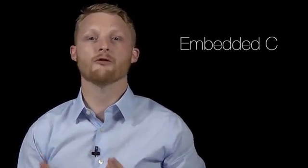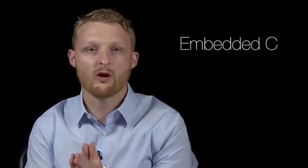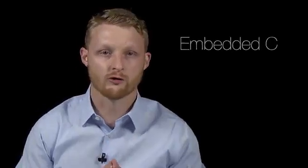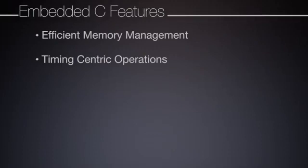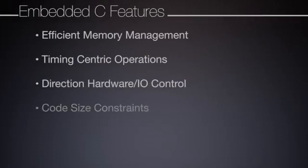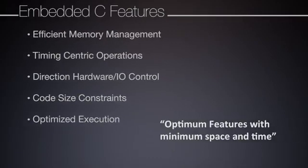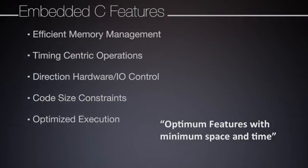Typical embedded engineers actually write a form of C called embedded C. Embedded C differs from C because it focuses on efficient memory management, timing-centric operations, direct hardware I/O control, code size constraints, and optimized execution. In general, you can think of embedded C as optimum features in minimum space and time.